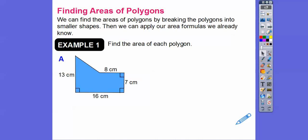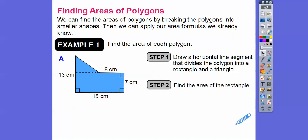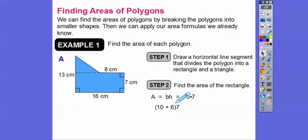Let's find the area of each polygon. For this one, the easiest way is to draw a horizontal line segment to cut it into a rectangle on the bottom and a triangle on top. The rectangle has base 16 and height 7, so base times height is 16 times 7. Since 16 is 10 plus 6, we distribute the 7: 7 times 10 is 70, 7 times 6 is 42, so 70 plus 42 gives us 112 square centimeters.